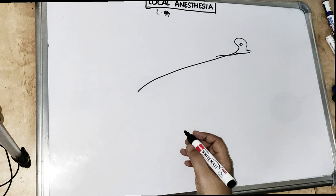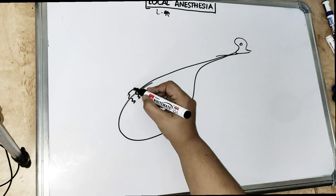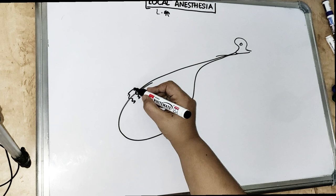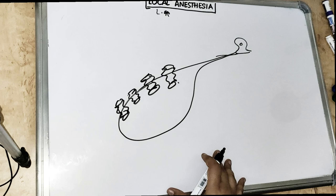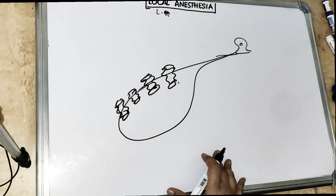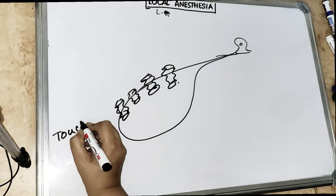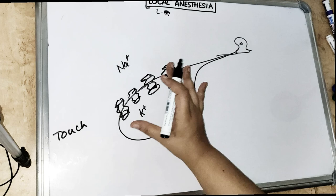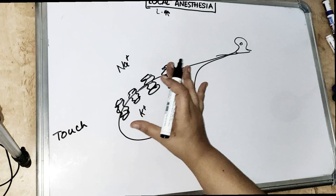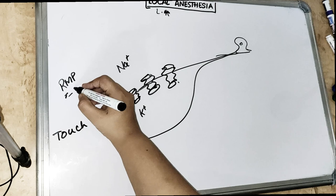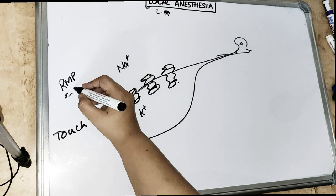These are the afferent fibers and if we look at the nerve terminal of the sensory fiber, there are sodium gated channels all around. Whenever there is an impulse — a touch, pain, temperature, any proprioceptive impulses — in the normal state, there are a lot of potassium inside and a lot of sodium outside. The resting membrane potential has a voltage of minus 80 millivolt.